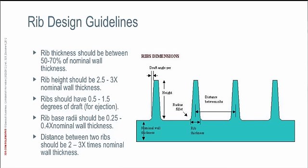Of primary importance: your rib thickness should be somewhere between 50 to 70 percent of your nominal wall thickness. So if your nominal wall thickness is 100 thousandths of an inch, the base of your rib should be no more than 70 thousandths of an inch — maybe even thinner. Your rib height should be about 2.5 to 3 times your nominal wall thickness. The rib should have about half to 1.5 degrees of draft to help part ejection. Radii at the base of the rib should be about 25 to 40 percent of your nominal wall thickness. The distance between two ribs should be at least 2 to 3 times your nominal wall thickness.